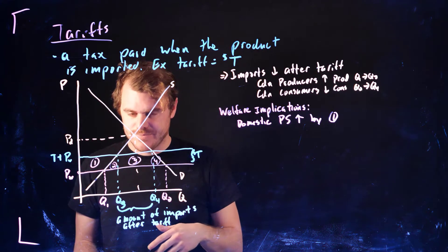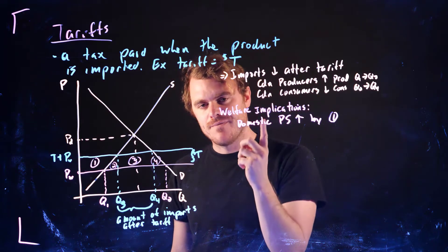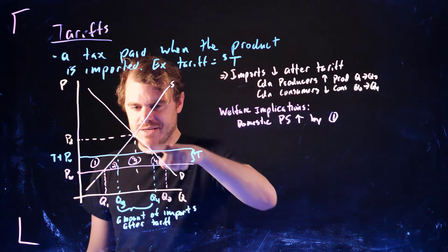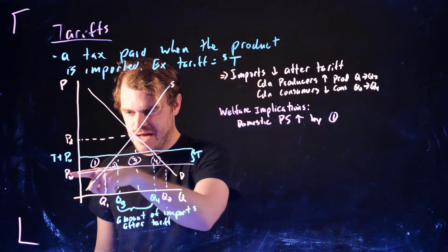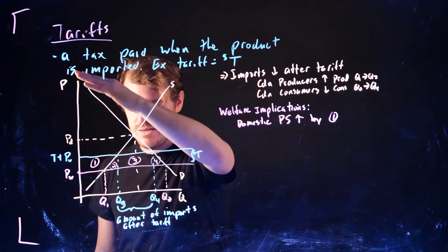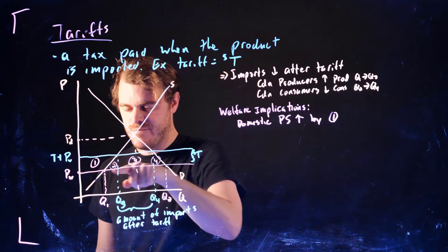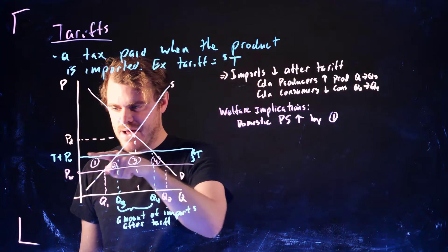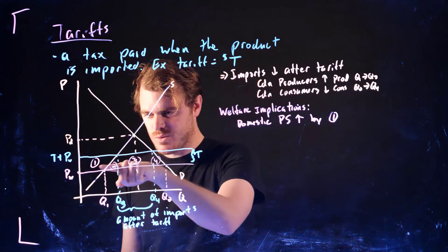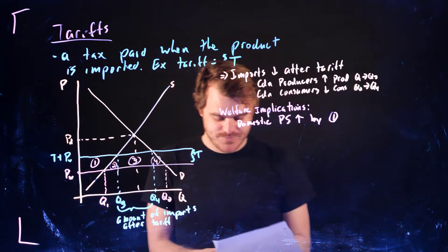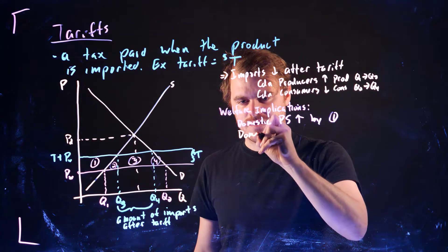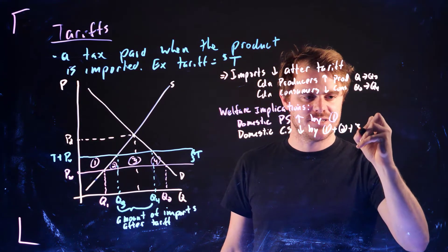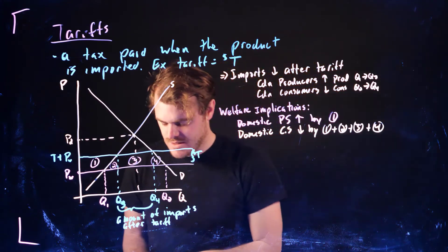Now let's think about the consumer side. Everything below the demand curve and above the price is consumer surplus. It used to be a large triangle with the bottom boundary at PW, but now with the price going up it's a smaller triangle bounded by the new tariff price. So domestic consumer surplus goes down by areas one plus two plus three plus four.